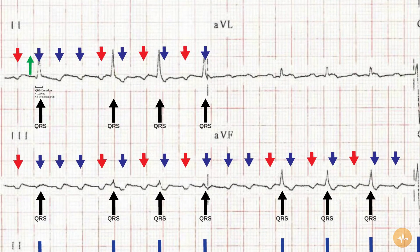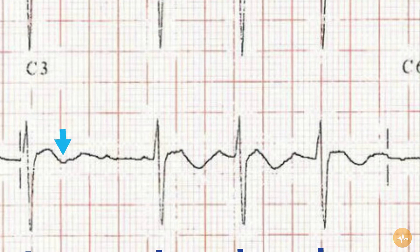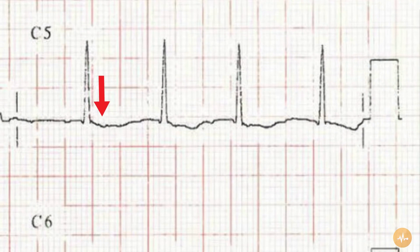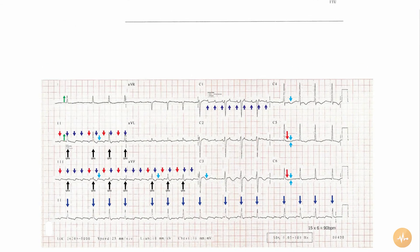The T wave morphology is slightly disturbed by being superimposed upon the flutter waves, but the T waves appear to be inverted in all 3 inferior leads 2, 3 and AVF. They are also inverted in leads V3 and V4 and flat in lead V5 and V6.